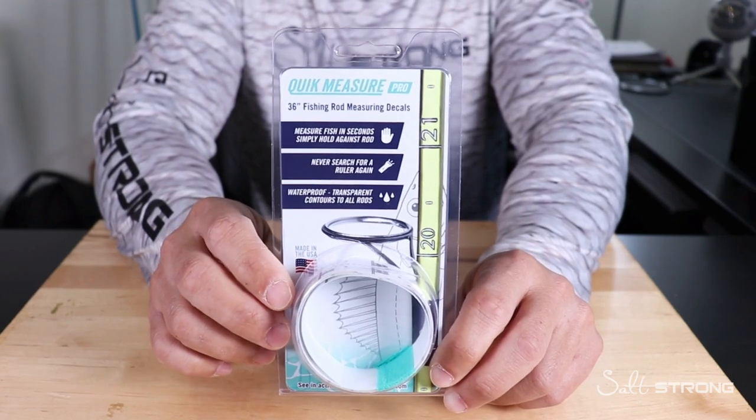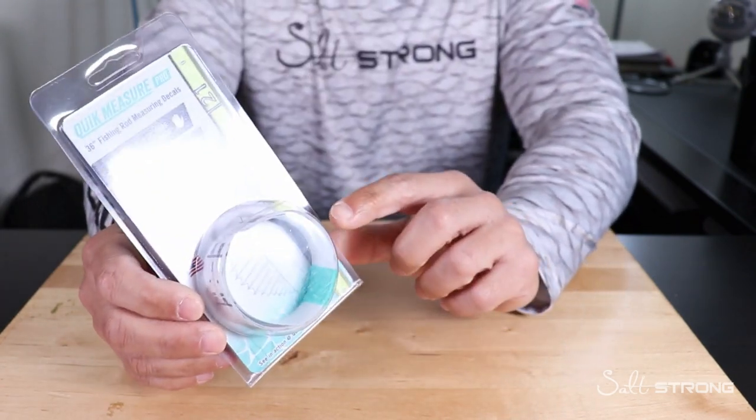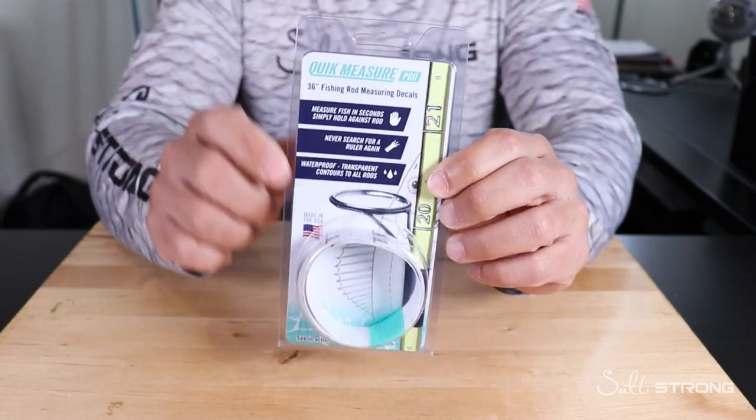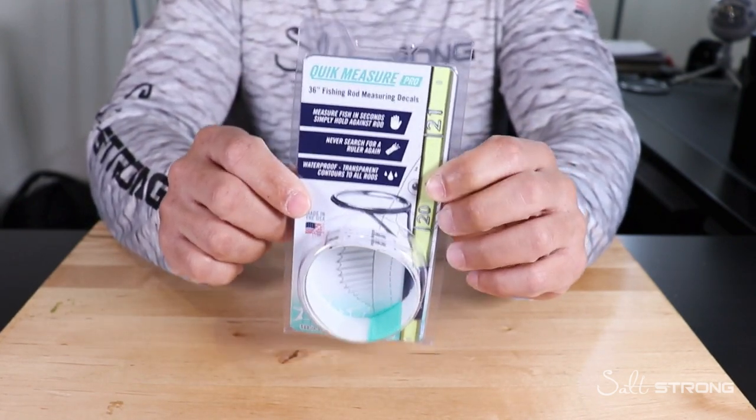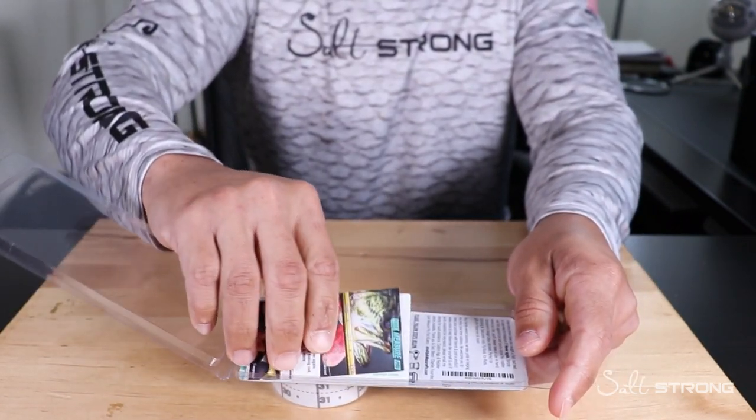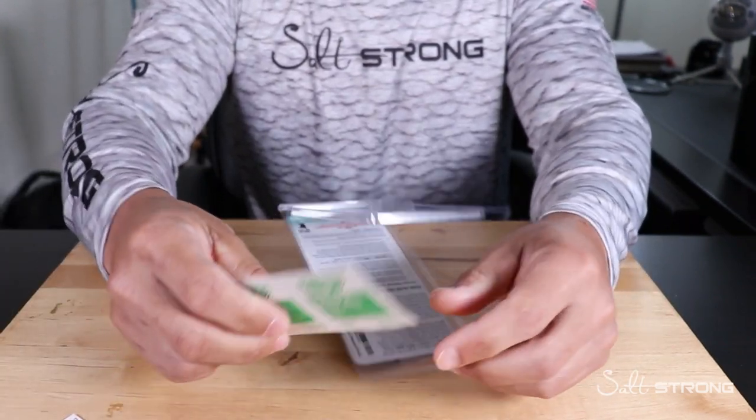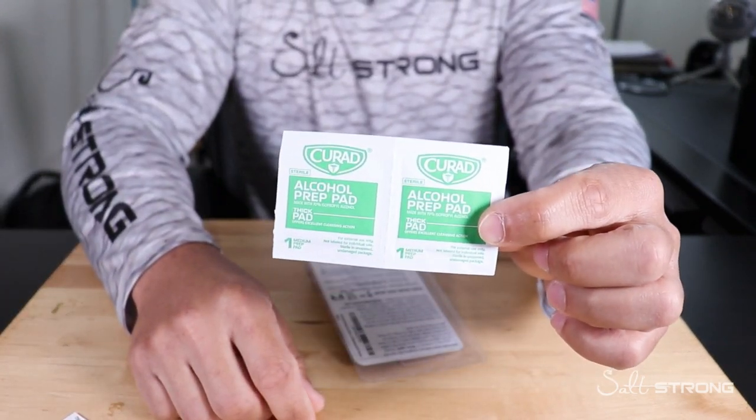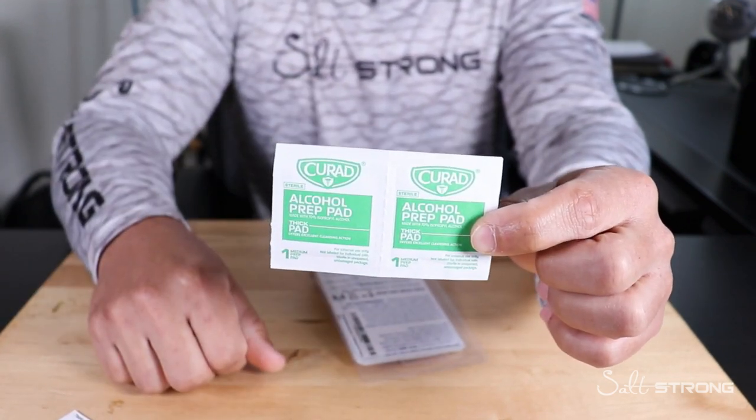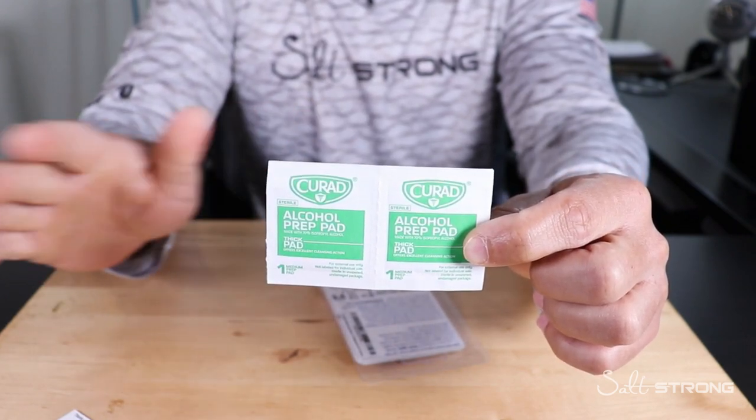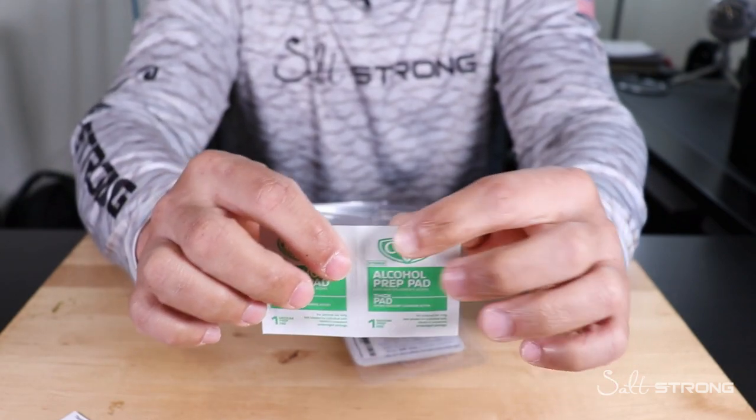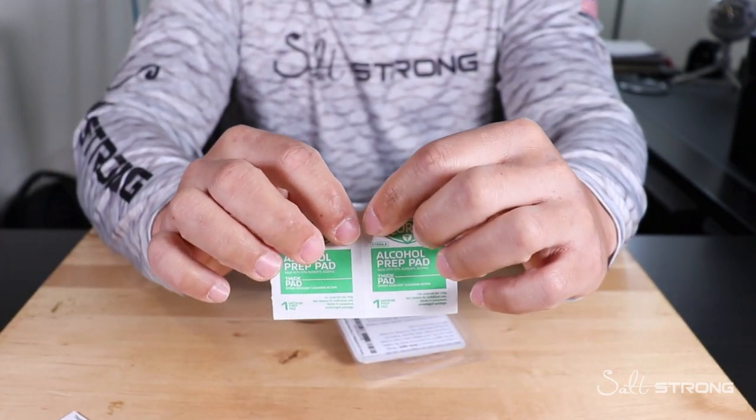As you can see this one here, this is the Quick Measure Pro and it actually comes with two measuring tapes in there. I'm going to be showing you how to actually apply this towards the end of the video, but we'll just go ahead and open this up and see what we're working with here. You got a business card in there and then you have some prep wipes. You're going to use this to wipe down the surface before you apply the measuring tape to it because you want to get any type of oils and debris off of there so that it adheres to your fishing rod or wherever you put it onto correctly.